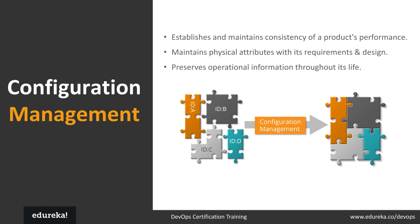Configuration management in terms of Ansible means maintaining the configuration of a product's performance by keeping records and updating detailed information describing an enterprise's hardware and software. This typically includes exact versions and updates applied to installed software packages, as well as locations and network addresses of hardware devices.